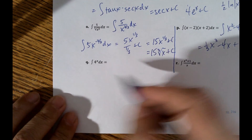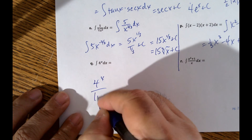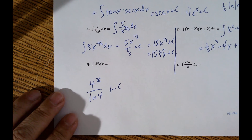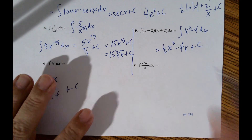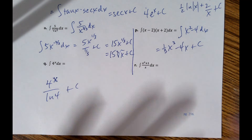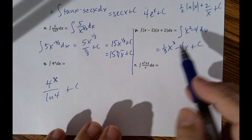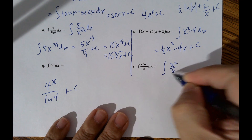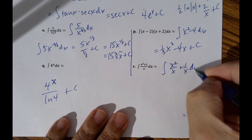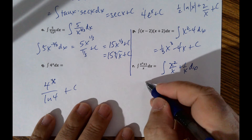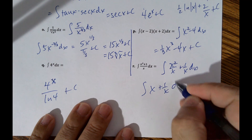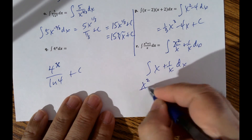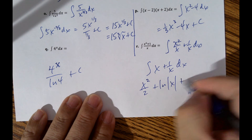Example q: the integral of 4 to the x — that's 4 to the x divided by the natural log of 4 plus C. Example r: whenever you have a polynomial over a monomial, rewrite it as separate fractions. So x squared plus 1 over x becomes x squared over x plus 1 over x, which is x plus 1 over x. Integrating gives x squared over 2 plus the natural log of the absolute value of x plus C.